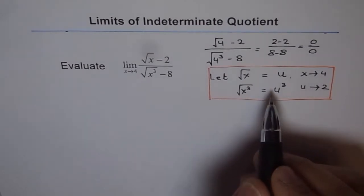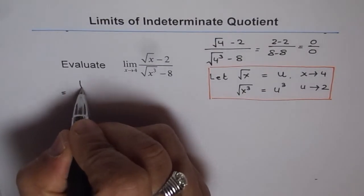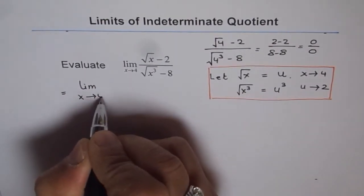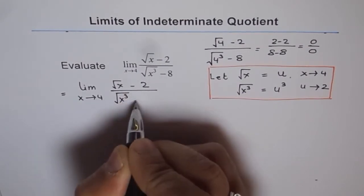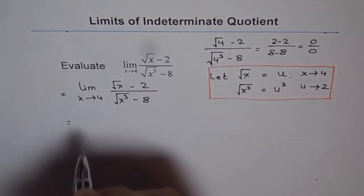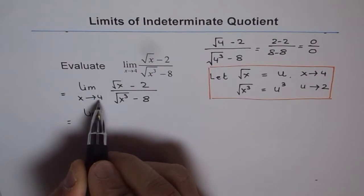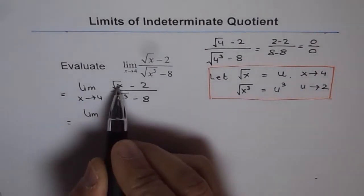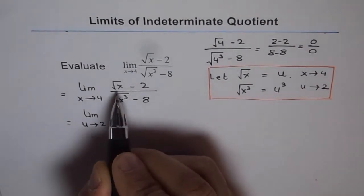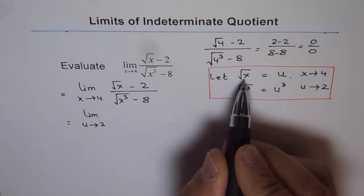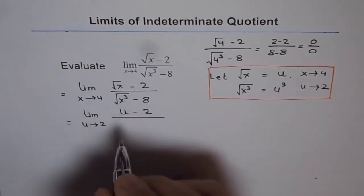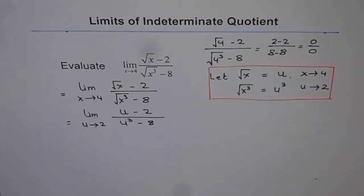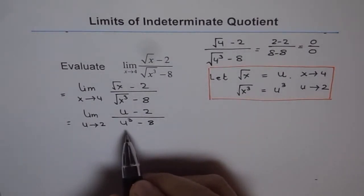So let us rewrite our question. We can write this as limit x approaches 4, square root of x minus 2 over cube root of x minus 8. And let us do this substitution. Instead of x approaching 4, we have u approaching 2. Square root of x has been replaced or substituted by variable u, so the numerator is u minus 2. And in the denominator, we get u cubed minus 8. Now we have got rid of radicals. That is the most important thing. Getting rid of radicals is the reason why we did this substitution.